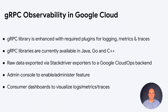gRPC observability runs in Google Cloud. On the producer side, it has plugins for logging, metrics, and traces. You also include the required exporters in the app — specifically, the Stackdriver exporters for metrics and traces configured to send data to the Google Cloud Ops backend. For logging, the gRPC observability code directly calls the Cloud Logging APIs. All of these are currently available in Java, Go, and C++ with more languages coming soon. The product also has an admin console to enable and administer the feature, and consumer dashboards that provide popular canned views and allow customizable queries.